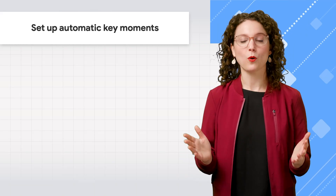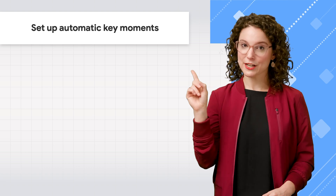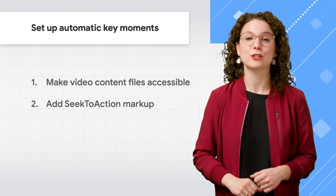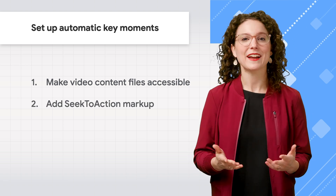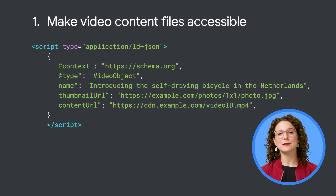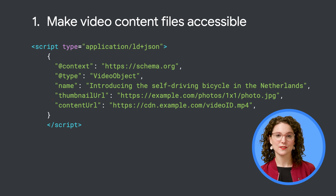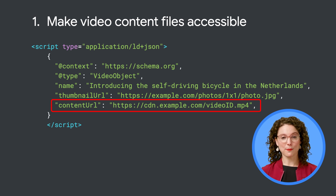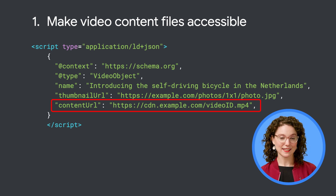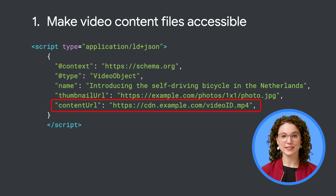All you have to do is some one-time setup work. Make sure Google can fetch your video content files and add schema.org markup to your pages. In order to analyze your videos, Google needs to be able to fetch your video content files. Use the contentURL property within VideoObject schema.org markup to identify the video file URL. Make sure Googlebot can access that file and that it's in a supported format listed in our developer docs.